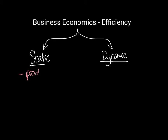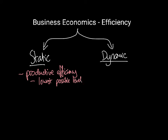The first type of static efficiency is productive efficiency. Productive efficiency is when we are producing at the lowest possible level of average cost — in other words, when a business is producing its products at the lowest cost possible.